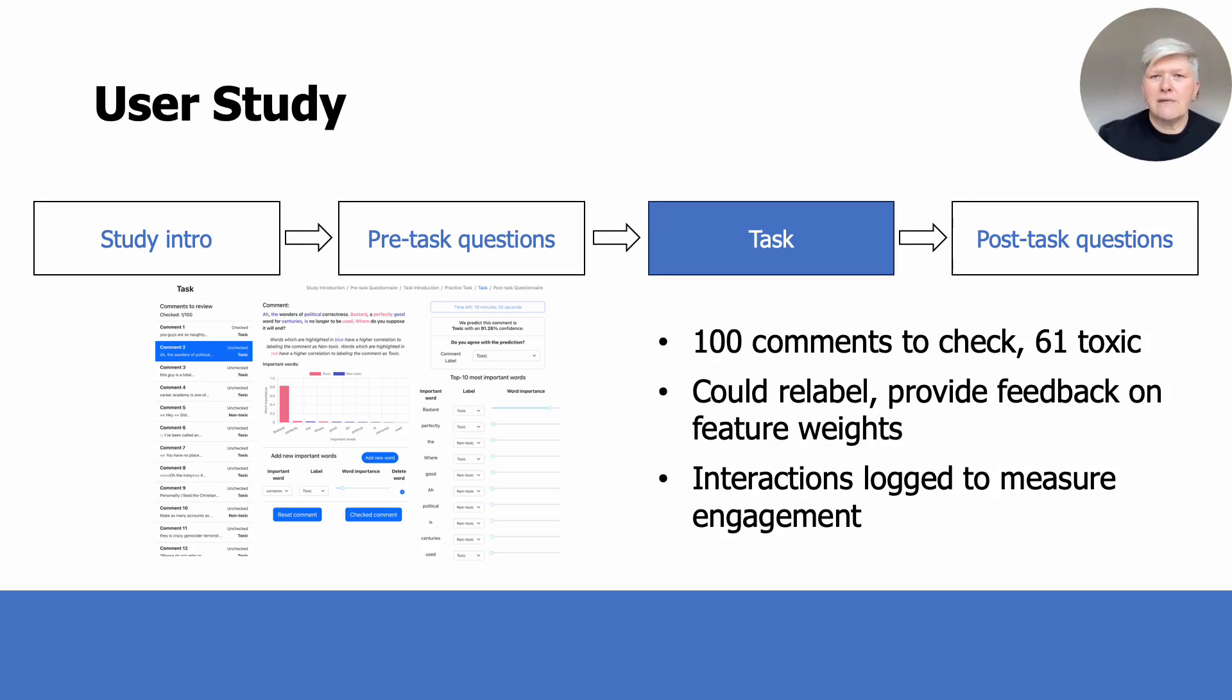In the main task, the participants were presented with an interface in which they could check 100 comments, of which 61 were toxic. The accuracy was 98%, so pretty good, but still held some misclassifications. The explanations consisted of highlighted words in the comments as well as a graph of their feature weights, and more information about the UI can be found in our paper. Participants were not expected to examine every comment, but rather to spend time to thoroughly think through each comment. They could confirm or relabel comments and provide feedback on feature weights, and any interactions were logged to measure the level of user engagement with explanations.